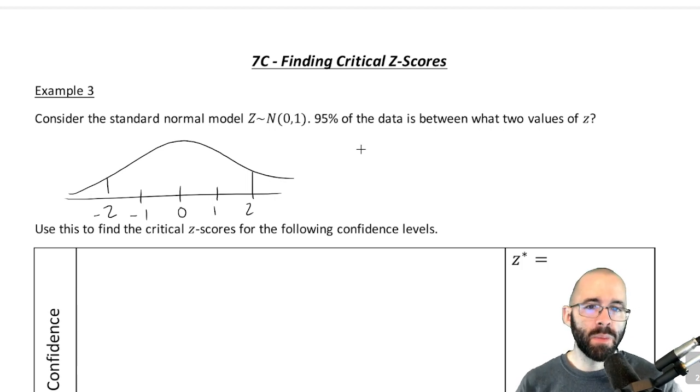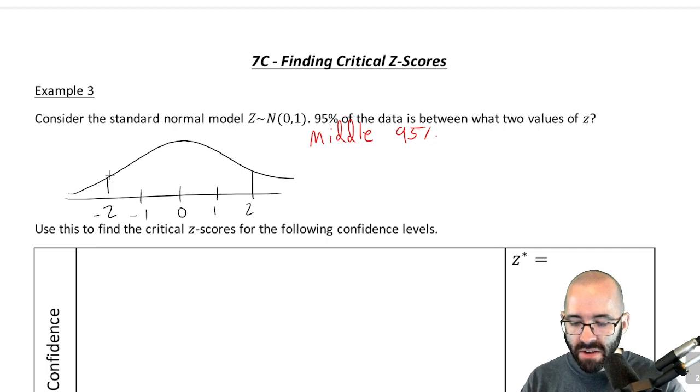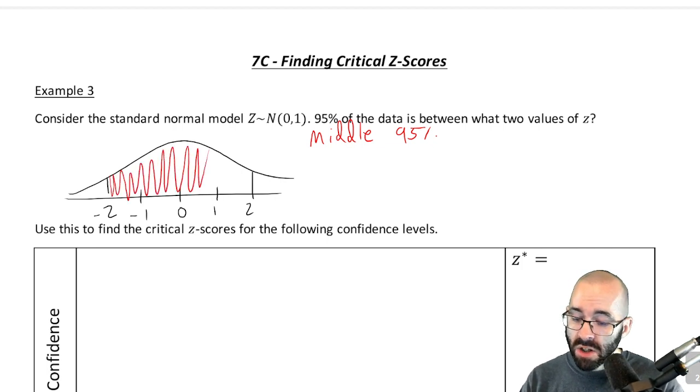But let's get a little bit more precise. How can we actually find the middle 95%? Think all the way back to unit five. It should be around two, but how can we do it more precisely?